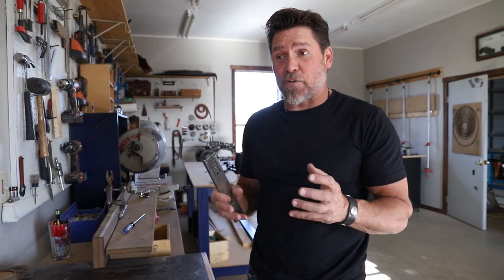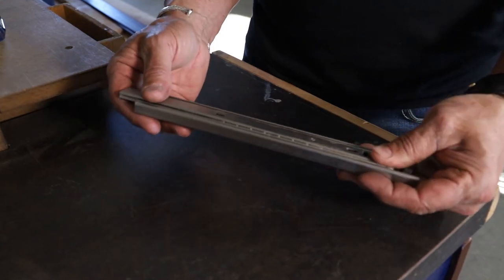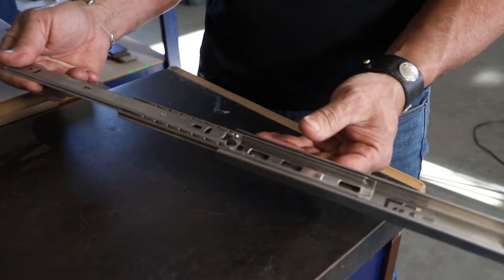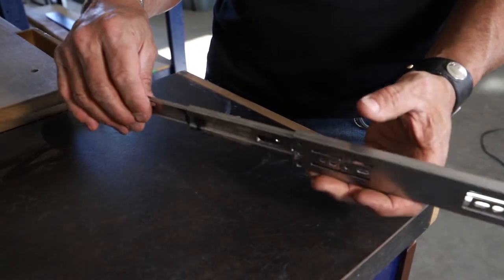I'm going to show you a couple of different options on how to adjust the hardware and how to remove it. This is one example of a full extension drawer slide. Very common. You see this in a lot of cabinets. But a lot of people don't know how to get the drawer released from the cabinet.